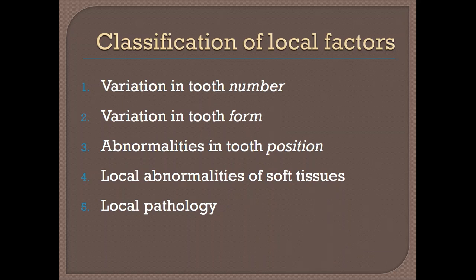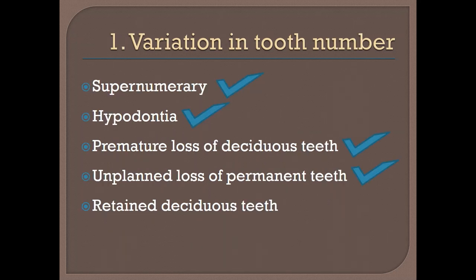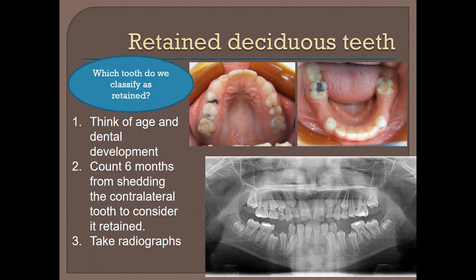We're going to finish up with the variation in tooth number, specifically retained deciduous teeth. We call a deciduous tooth a retained tooth when it is beyond the dental age that it's supposed to be present with. If the contralateral permanent tooth has erupted and the affected side has not erupted yet, we wait six months. If the deciduous tooth does not get loose and lost, then we call it a retained tooth.